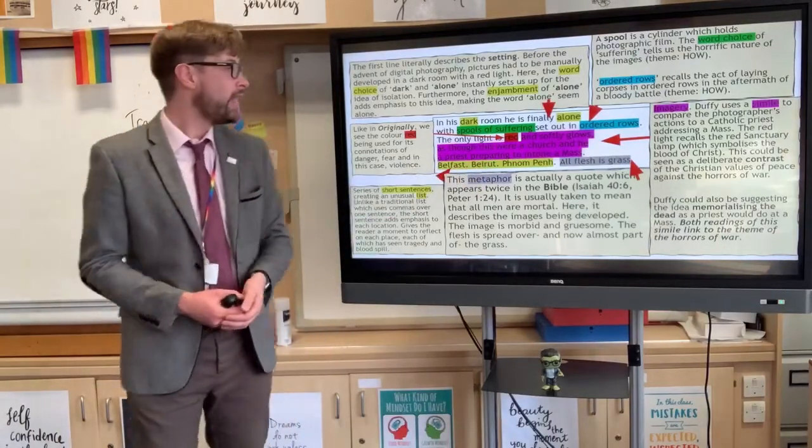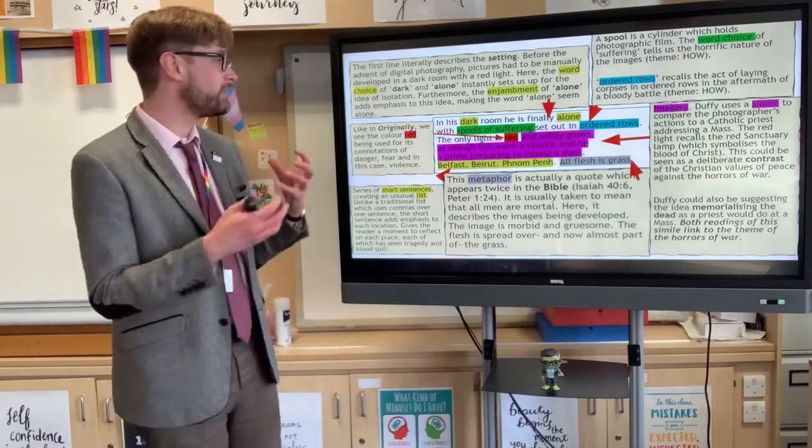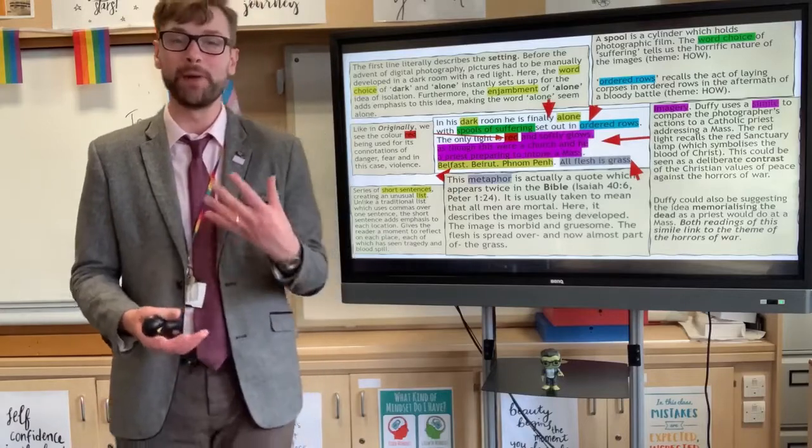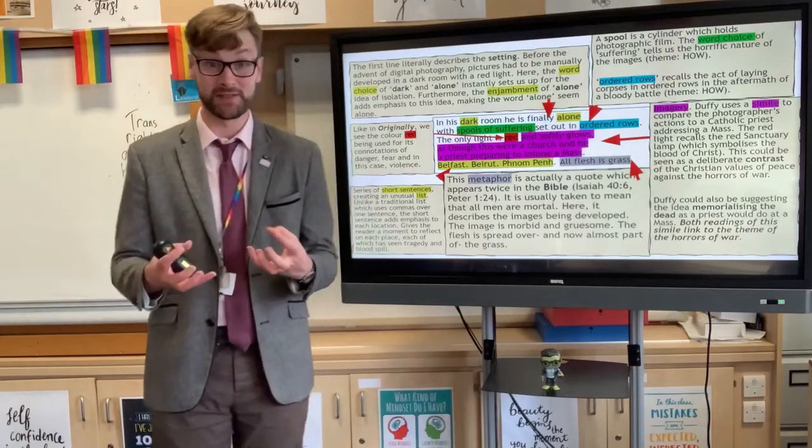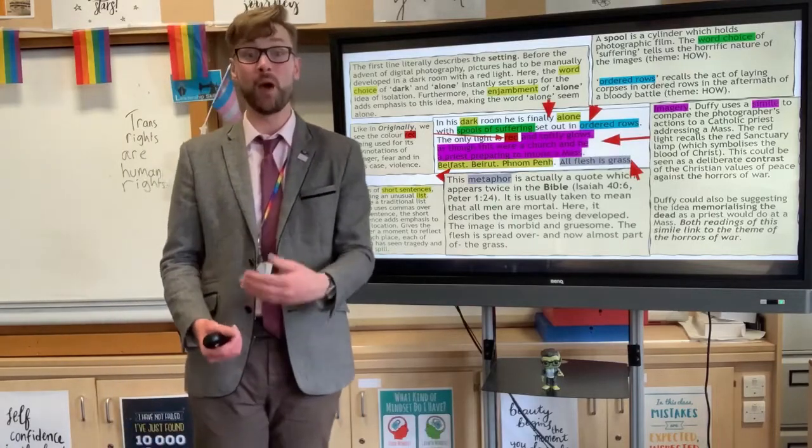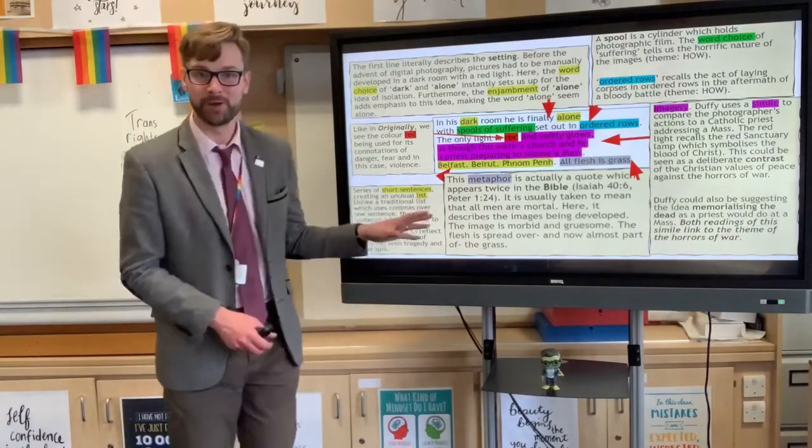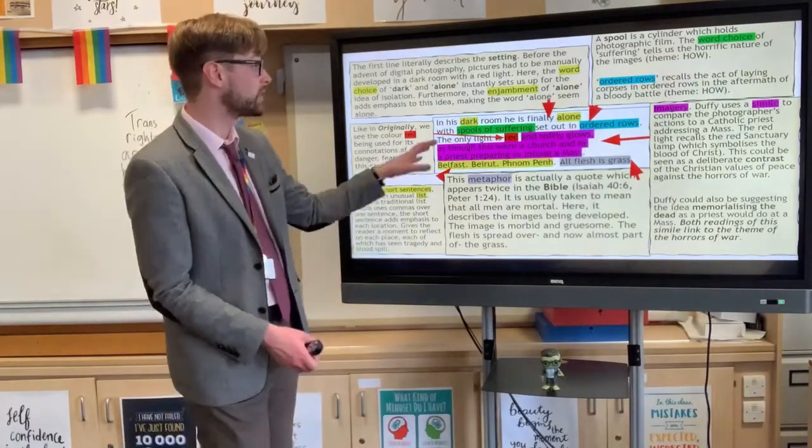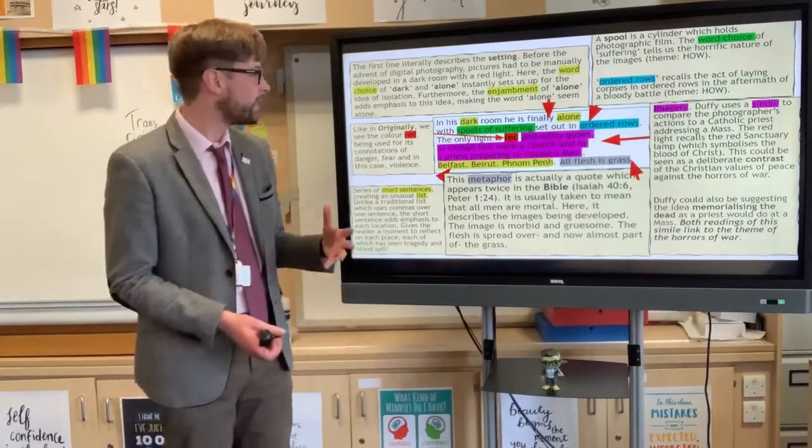That's how the photographs would have been developed. They would have been dipped in a solution, left to dry, in a red light, and that develops the photograph. Now, the word red here, much like when it's used in the first stanza of Carol Ann Duffy's other poem on the Scottish set text curriculum, Originally, the word red here, yes, it describes the room, but in a metaphorical sense, this word choice here can be read for its connotations of fear, of danger, and I would say in this case, definitely violence, because this is a poem which only gets more violent as it goes along. Highlighted in the pinky sort of purple color here is the lines and softly glows as though this were a church and he, a priest, preparing to intone a mass. This is a very interesting comparison. Duffy is using the simile. She is comparing the war photographer and his actions to that of a priest intoning a mass.